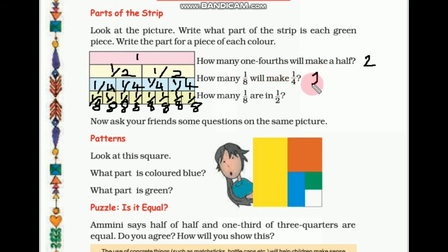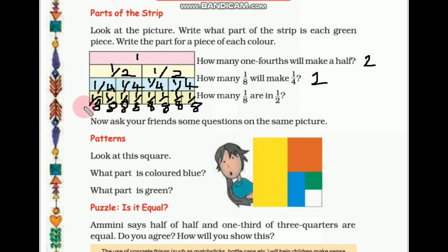So we can write 2. Now how many 1 eighths are in half? Here is half, and how many 1 eighths are in it? We look at the green strip: 1, 2, 3, 4. So 4 one-eighths are in this half. We can write here: 4.